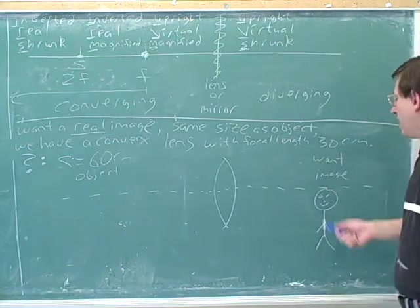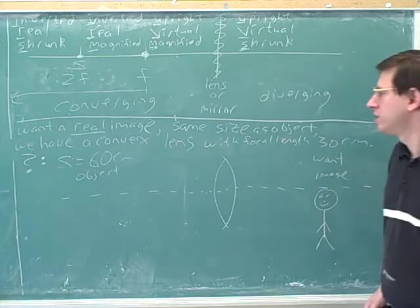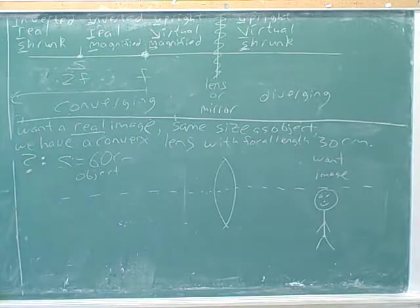And we still want the doll to be right side up. We still want the doll to be oriented like this. Draw it the way the object should look. How should, what would the picture of the object look like on the left-hand side in order to get an image that matches that?